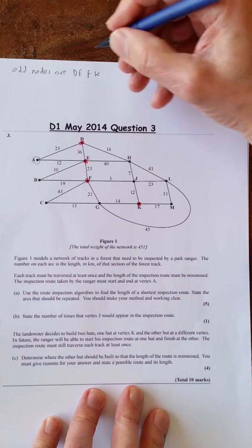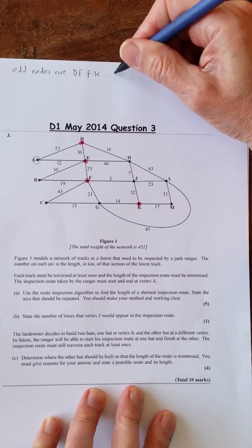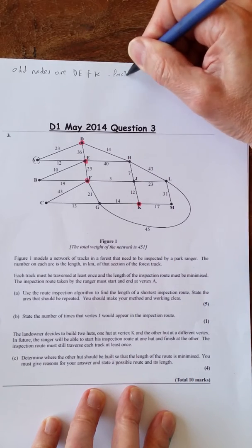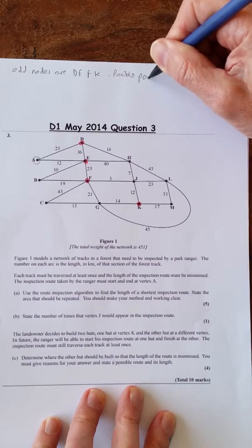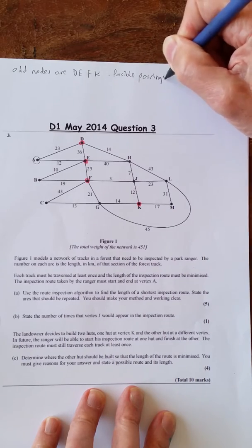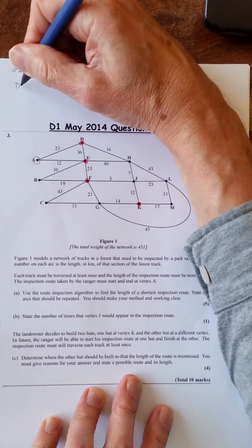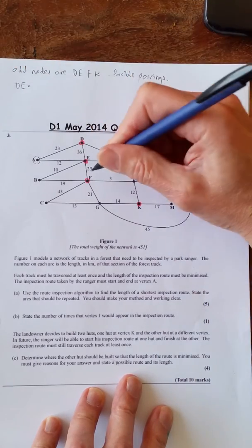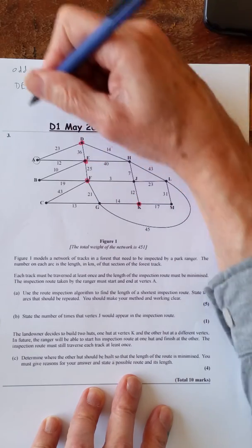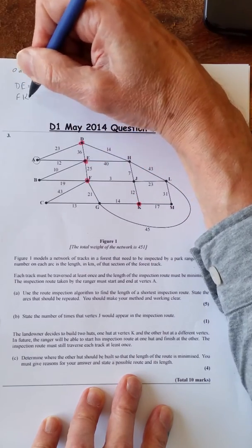So start with this. Odd nodes are D, E, F and K. And then we'll look at the pairings. Look at the possible pairings.